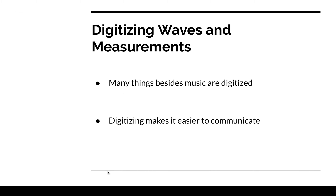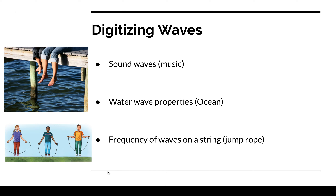Digitizing waves and measurements. Many things besides music are digitized — digitizing makes it easier to communicate. When we digitize waves, we look at sound waves and we can see that through music. Water wave properties are seen in the ocean; we look at the properties and can identify the different types of waves. When we look at jump roping, the frequency of the waves on a string tells us how fast we're going and how many times the wave has gone through. That's a way we digitize our information by counting it or recording what we see.